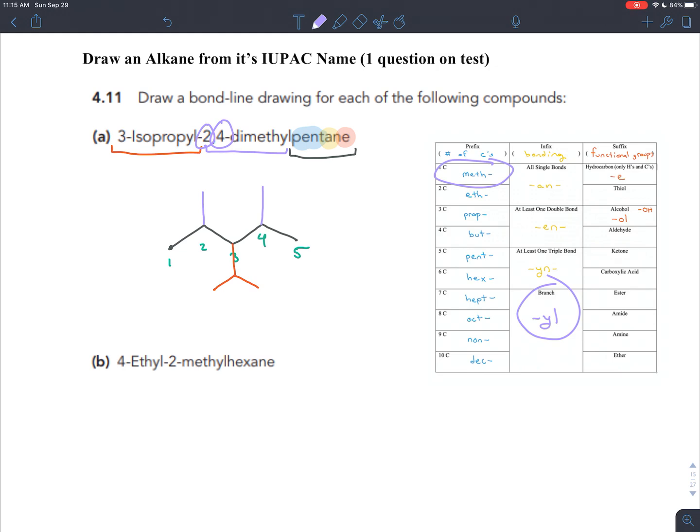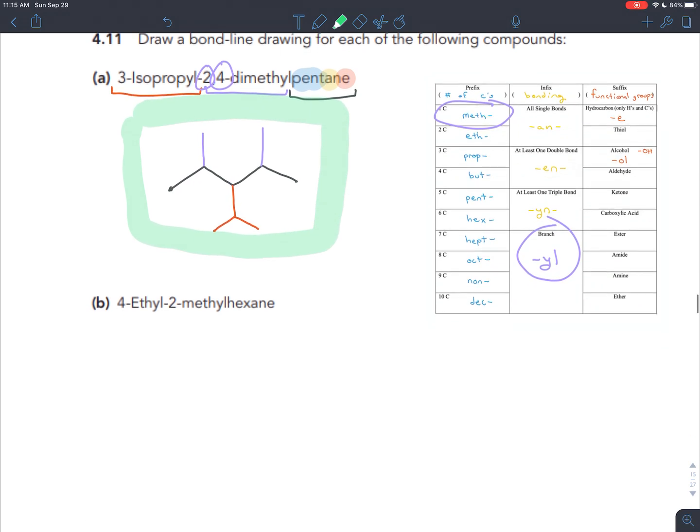So we have our pentane backbone in black. I've numbered the carbons in green correctly now. And then you can see at carbon three, we have our isopropyl group in orange. And off of carbon two and four, we have each a methyl group in purple. And so that would be the structure. You wouldn't leave these numbers here, but that is three isopropyl, two, four dimethyl pentane.